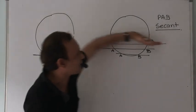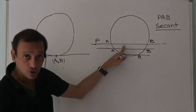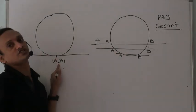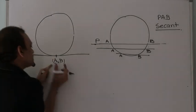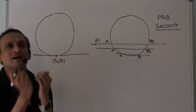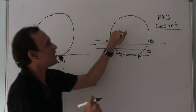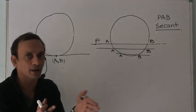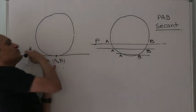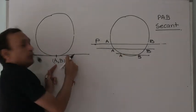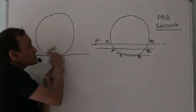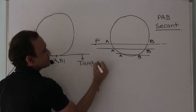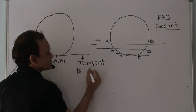A line that intersects a circle at two distinct points is a secant. A line that intersects the circle at two coincident points — physically one point but mathematically two coincident points — is the limiting state when A and B coincide. This state of the line is called a tangent to the circle.